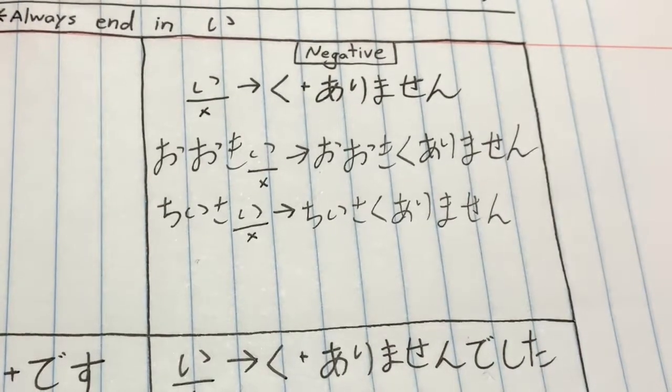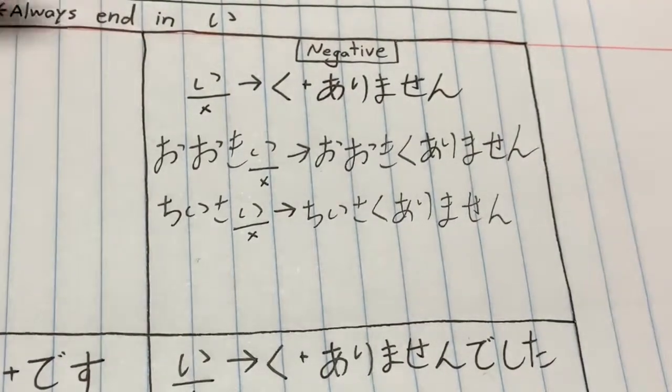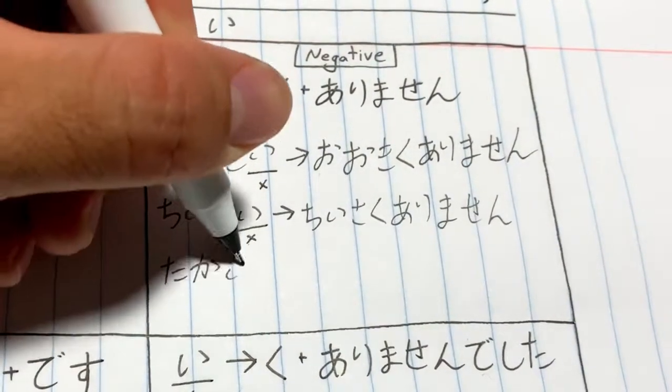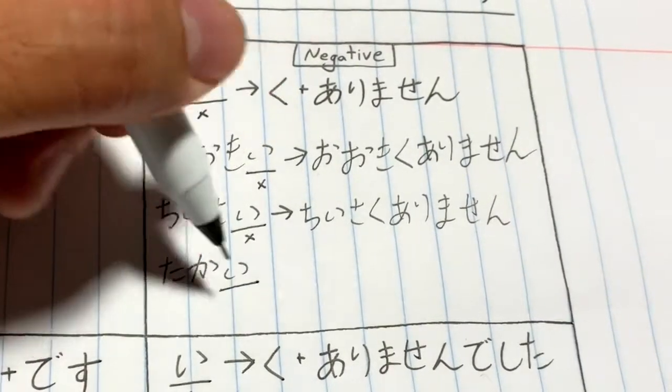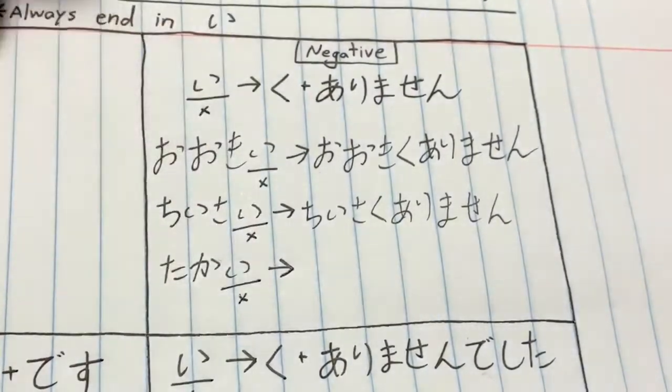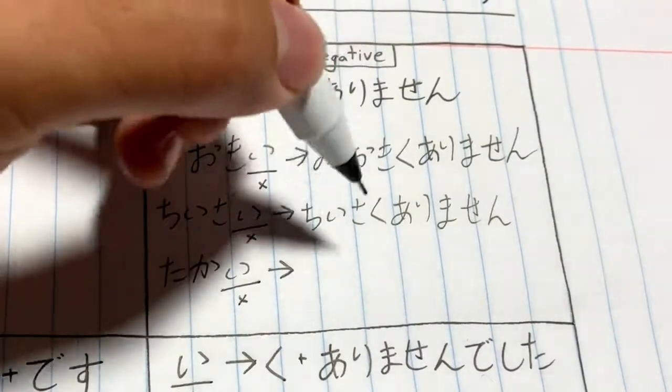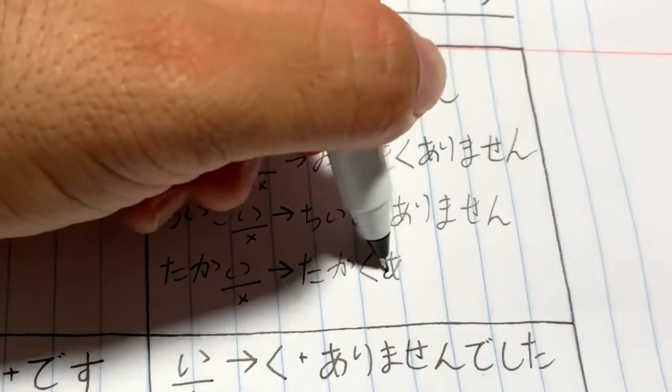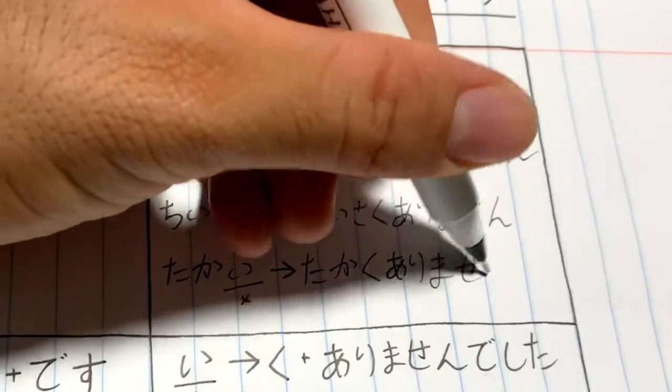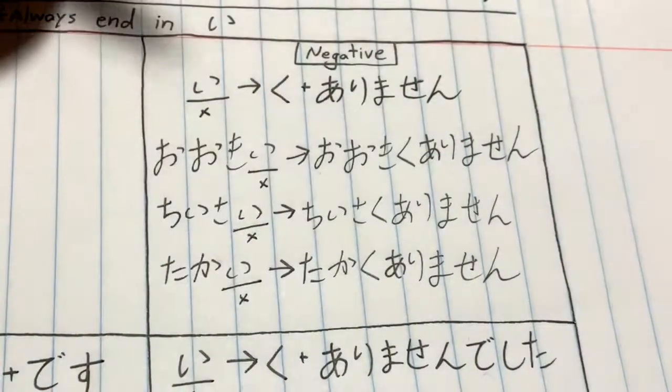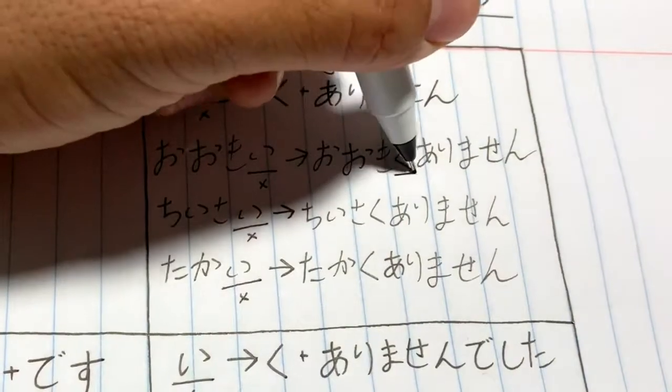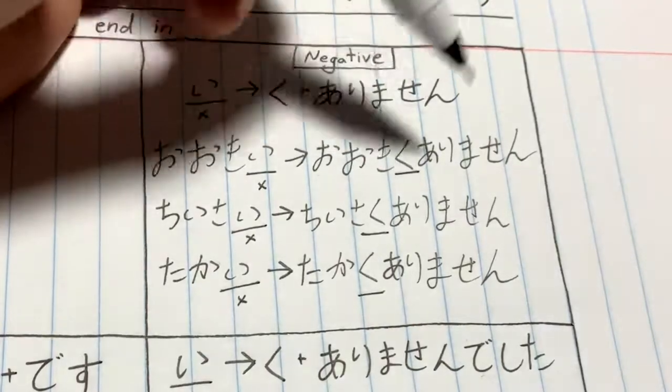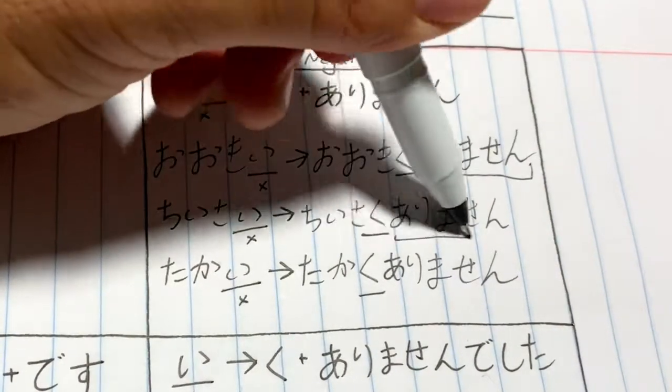Let's take the next one: 小さい (chiisai), which is small. We see we have the 'i' here indicating it's an adjective, so we replace that with く (ku) and add ありません (arimasen). So 小さい becomes 小さくありません (chiisaku arimasen), meaning 'it's not small.' And the last one for repetition: 高い (takai), which is tall or expensive. We see the 'i' here, we get rid of that and replace it with く (ku) and add ありません (arimasen), so 高くありません (takaku arimasen) means 'it's not expensive.' I'll underline the く (ku) here so we can see that the く used to be an 'i,' and then we just add ありません (arimasen) after that.